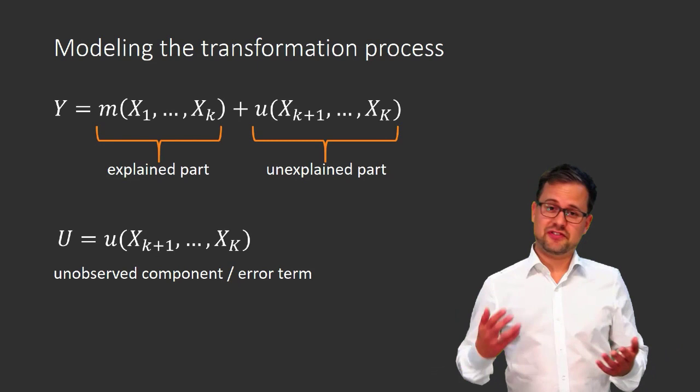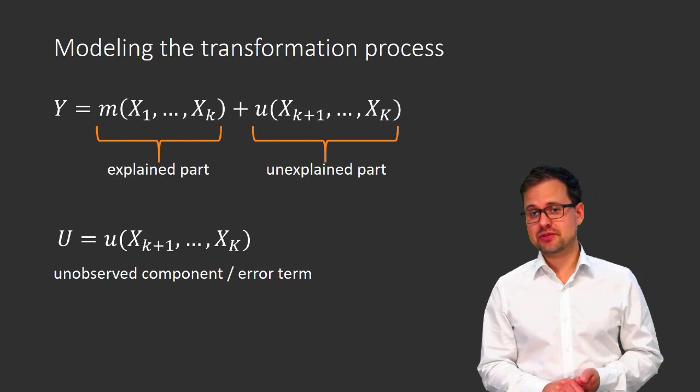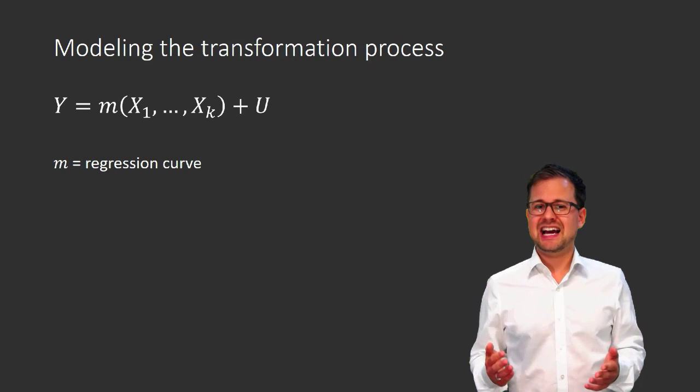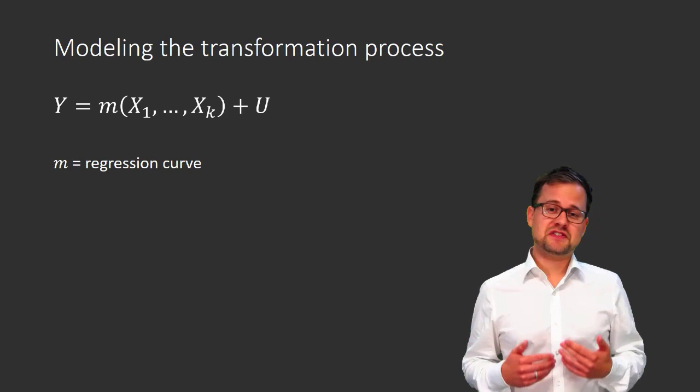Now that we have defined u, we can write the linear regression model more concisely: y equals the function m evaluated at the regressors plus the unobserved component u. The function m is called a regression curve. At this point it could potentially be a very complex function. However, for the linear regression model, we make our lives easy and assume it takes a particularly simple, linear form.